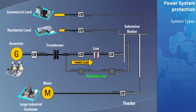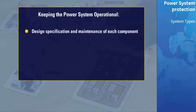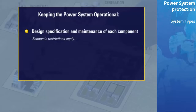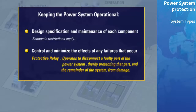Since each link in the chain involves a large investment in equipment, alternates are frequently prohibitively expensive. To ensure both maximum return on the investment and to provide reliable service to satisfy customers, the whole power system should be kept in operation. This is accomplished in two ways: first, by the specification of the design and the maintenance of each component to prevent failure; and second, to control and minimize the effects of any failures that do occur. This is where the protective relay fits into the power system — the device which operates to disconnect a faulty part of the power system, thereby protecting that part and the remainder of the system from damage.